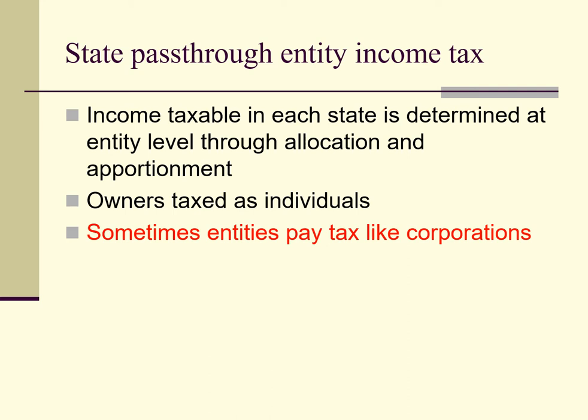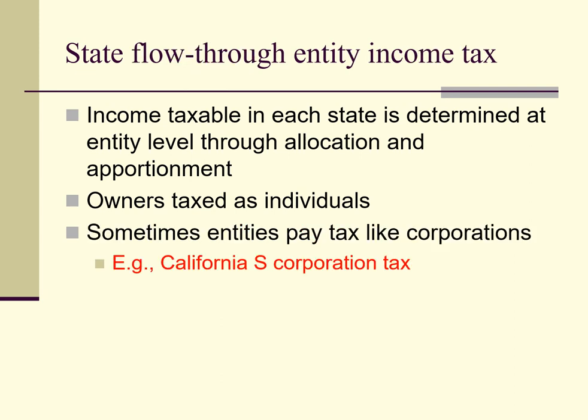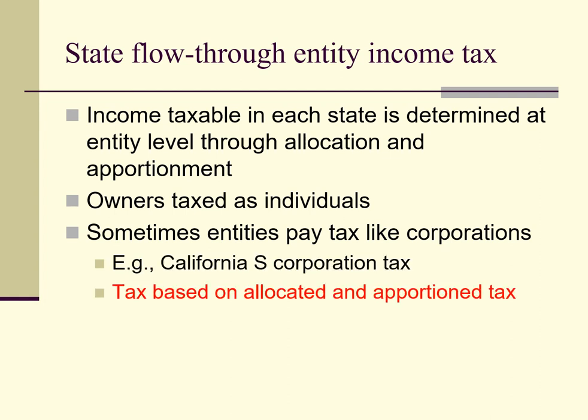Note, however, that in some cases the entity itself is taxable. For example, in California, S-corporations pay a small corporate-level tax. When there is an entity-level tax, the amount of income taxable in a particular state is ordinarily determined based on allocation and apportionment. Entities are ordinarily not taxed on 100% of their worldwide income. Instead, they are ordinarily taxed in a state — even the state of incorporation — based only on allocated and apportioned income.